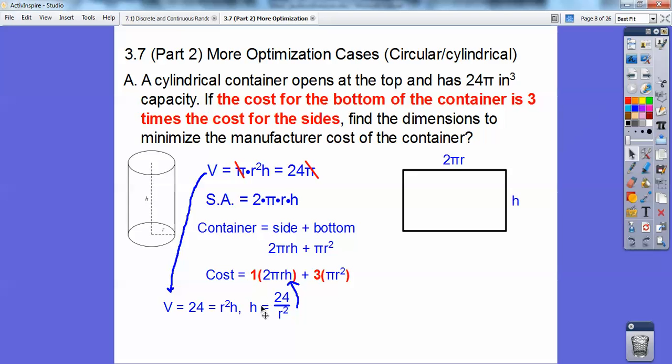The volume is 24π, so 24 equals r²h. Solve for h: divide both sides by r² and you get 24 over r². That's going to be substituted right in there, and we'll have everything in terms of one variable, in this case r. There it is right there.